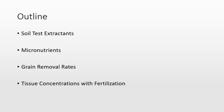We're going to talk a little bit about micronutrients and some of the work — it's really a collection of work that we were able to compile across the university. Grain removal rates and then tissue concentrations with fertilization. These two pieces really stem from work that we did with on-farm trials, looking at these other pieces of nutrient management. So we're not talking about soil critical levels, but we're talking about nutrient removal rates and also tissue concentrations as diagnostics.